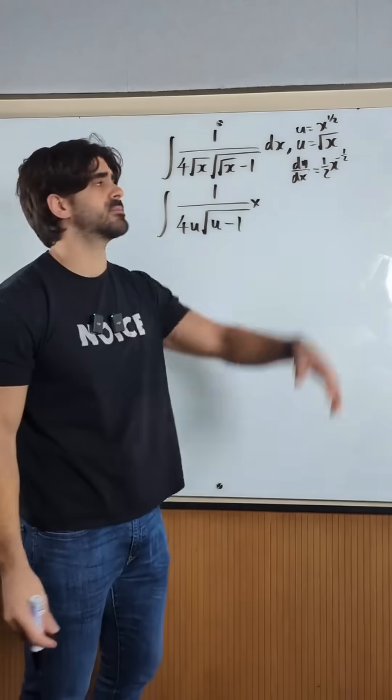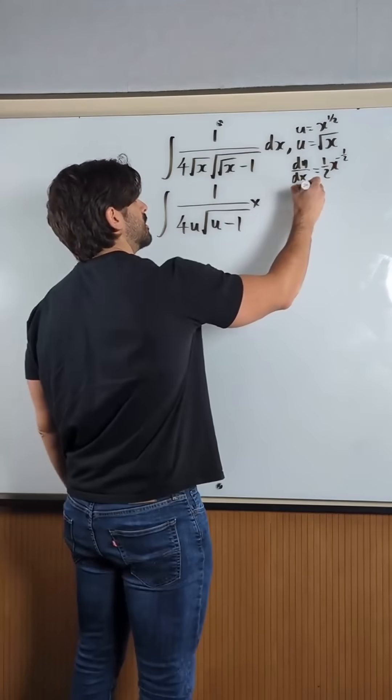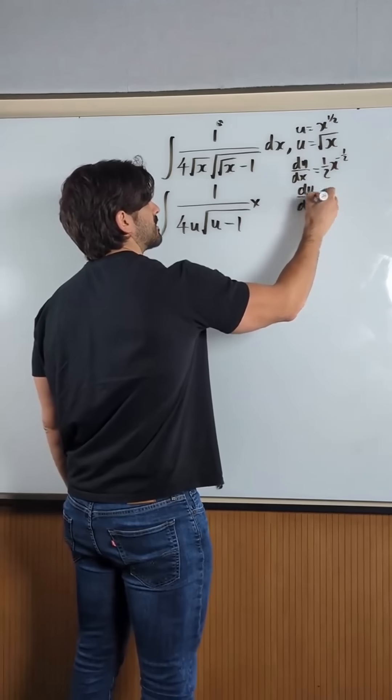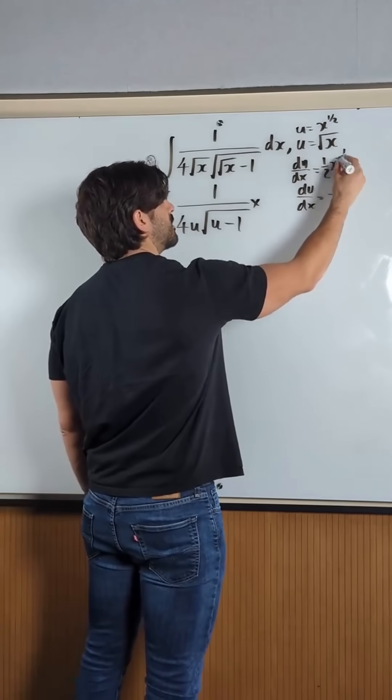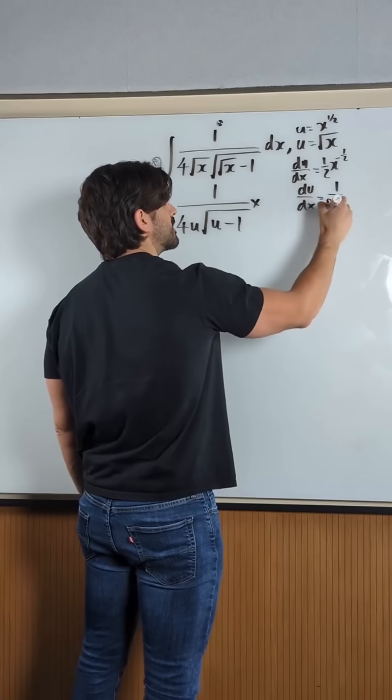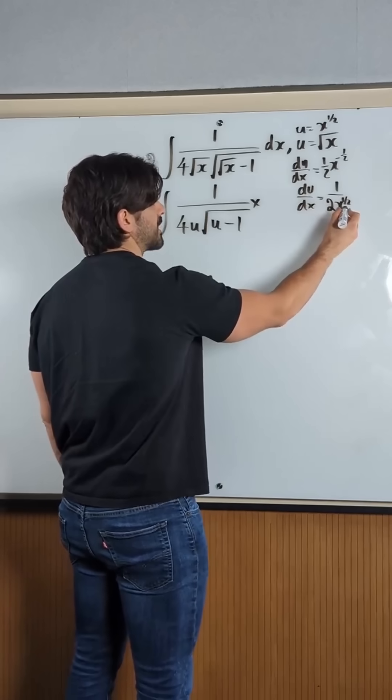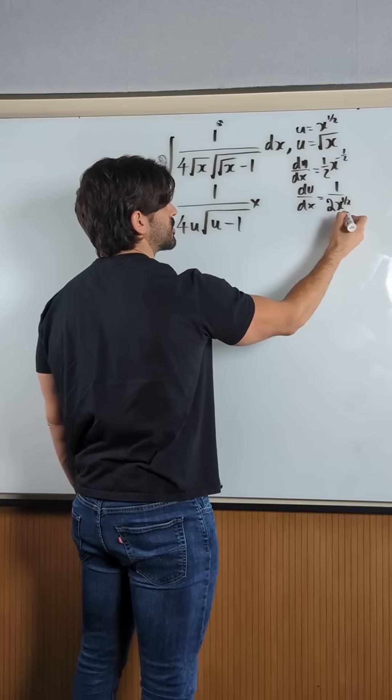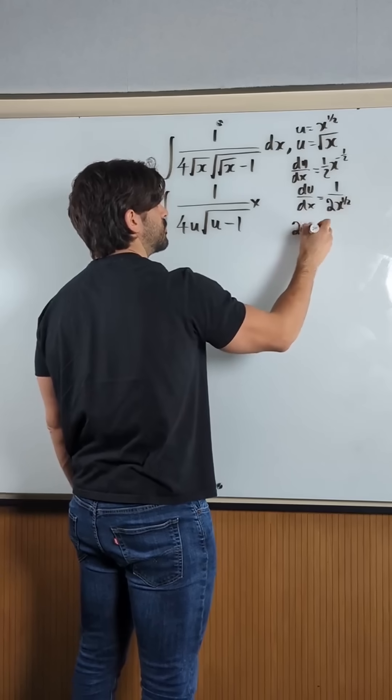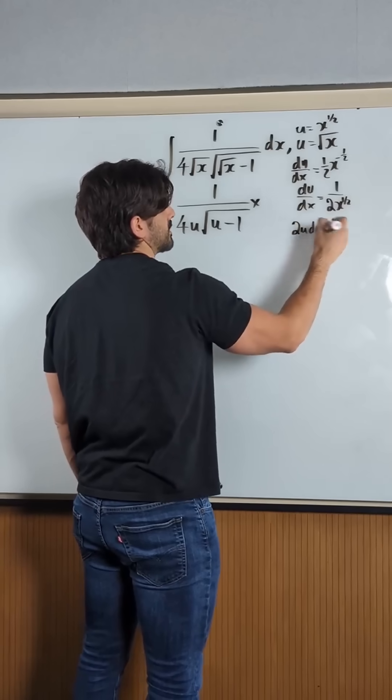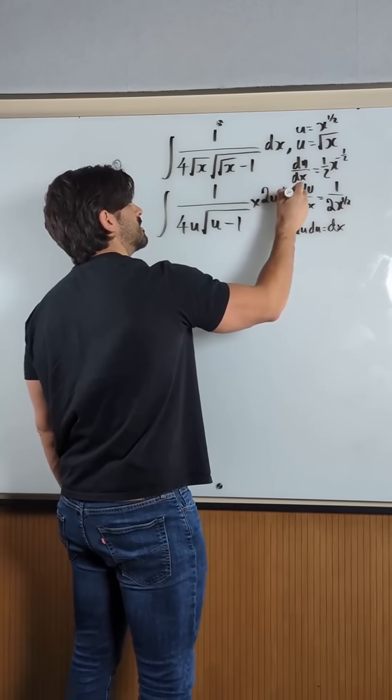I want to rewrite this in terms of u first. So du by dx is 1 over, negative power means you bring into the denominator like this. Multiplying through, you get 2x to the half which remember is u, so this is 2u. Multiplying through you have 2u du equals dx. So I have 2u du.